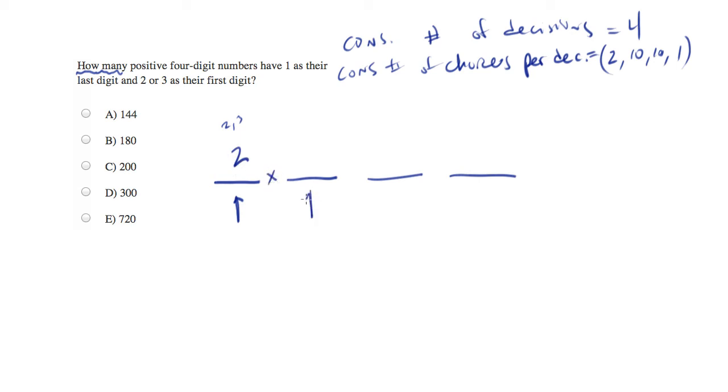In the second decision, you can have any digit, zero through nine, so there's ten of those. In the third case, we have the same criteria. You can pick any digit, zero through nine.